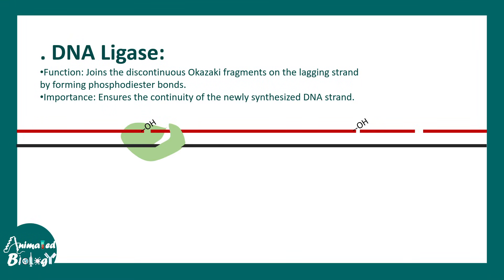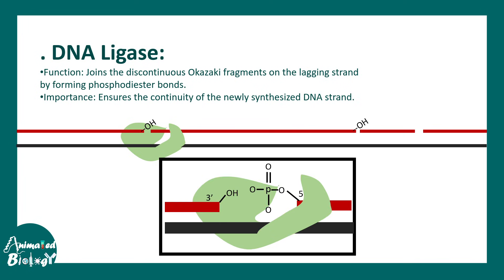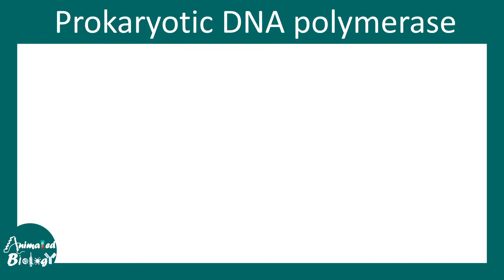The last enzyme is DNA ligase. It joins the discontinuous Okazaki fragments on the lagging strand by forming the final phosphodiester bond. Zooming into the broken region, the 5' phosphate group is free and the 3' hydroxyl group is present; a phosphodiester bond is formed between these two, triggered by ligase in an ATP-dependent reaction.